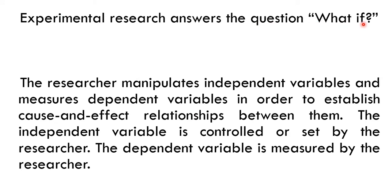Experimental research answers the question: what if? The researcher manipulates independent variables and measures dependent variables in order to establish a cause and effect relationship between them. The independent variable is controlled or set by the researcher — for example, a teaching method. The dependent variable is measured — for example, student learning outcomes.